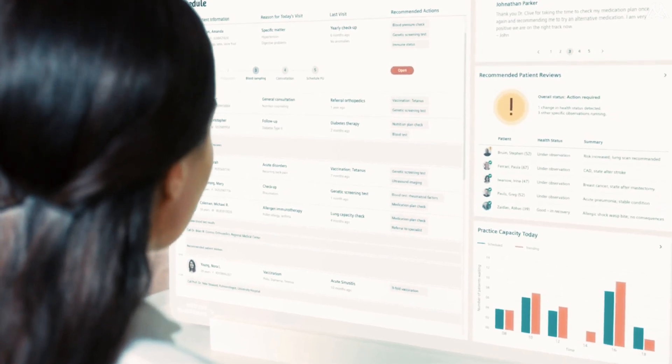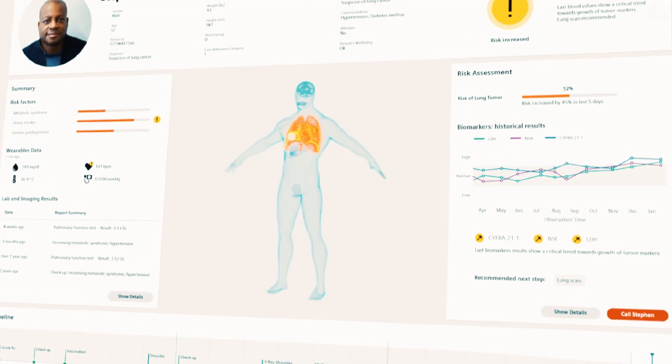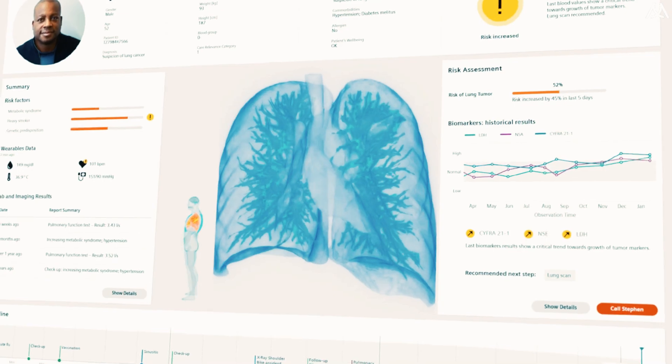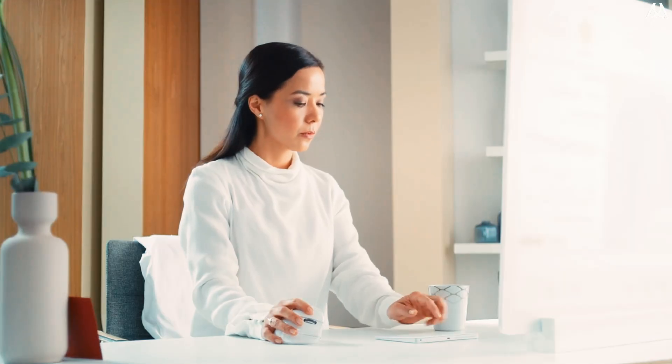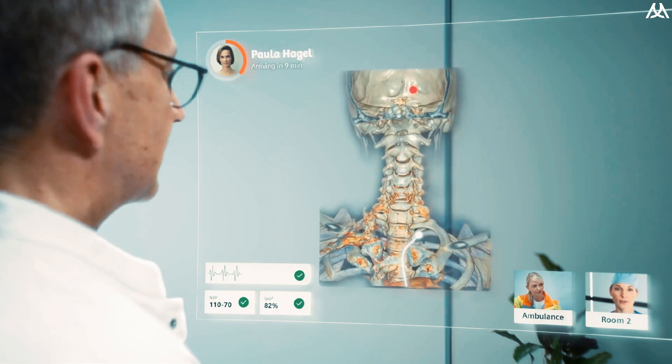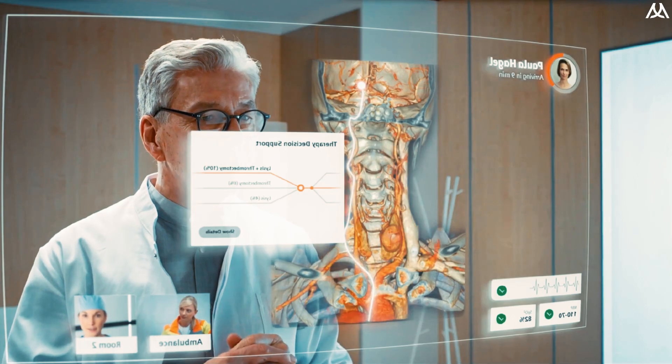Given that genetic variances contribute to around 75% of an individual's IQ, uncovering and leveraging these genes could have a profound impact on the potential development of highly intelligent humans in the future.